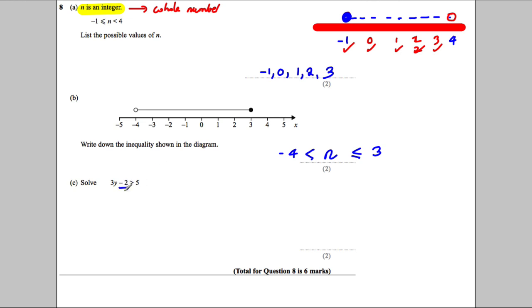Lastly, we're asked to solve this. Well, we're going to add 2 to both sides. Some students think of bringing the negative 2 to the other side and adding 2. So we would have 3y, that stayed, is bigger than 5 add 2. So let's work it out: 3y is bigger than 7.